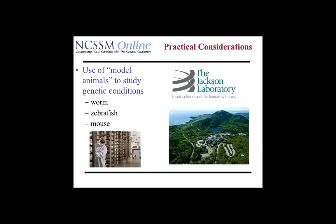Some practical considerations in studying genes and the genome: we can't do studies obviously on humans — there are practical and ethical considerations that preclude us from being able to study the genetics of humans. Although we do a lot of human genetic studies, it's pretty hard to do experiments on humans because of logistical, practical, and ethical issues. So fundamentally what we do in computational biology is use model animals to study genetic conditions. We can breed animals and they breed more quickly than humans — we don't have to wait nine months for a baby to be born — and we can study lots of animals and get a good statistical analysis.